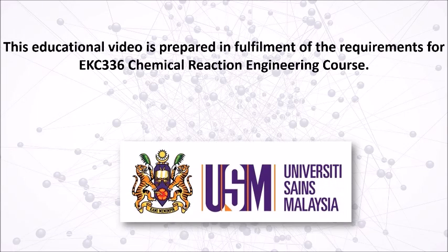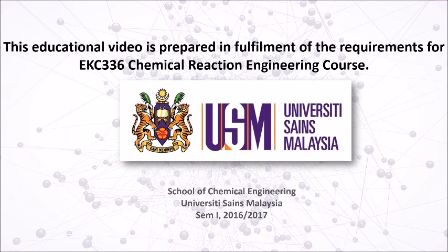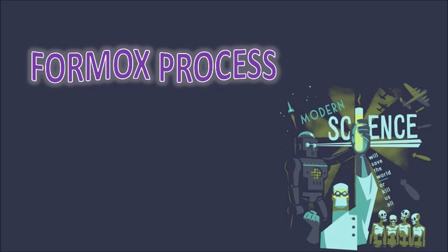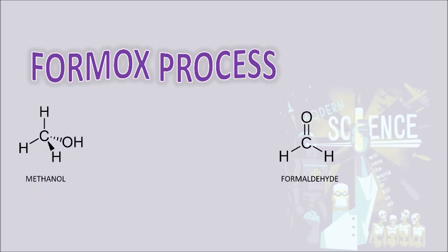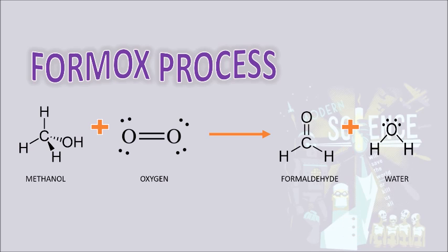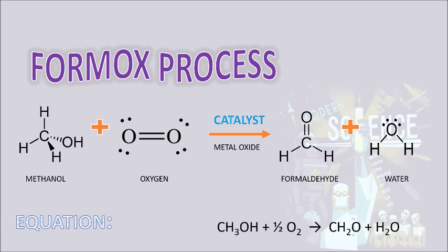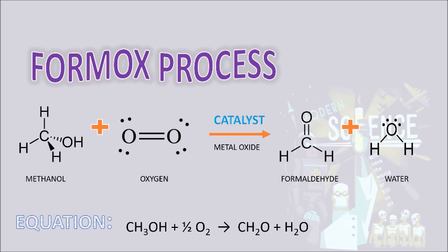In this video we would like to talk about the Formox process. The Formox process is basically about the formation of formaldehyde when methanol is mixed with excess air. The catalyst used in this process is metal oxide. The general equation is: CH3OH + ½O2 → CH2O + H2O.